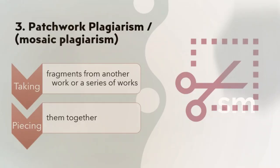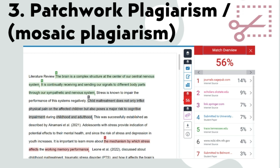The third type of plagiarism is called patchwork plagiarism or mosaic. In this type of cases, the person takes fragments from another work or a series of works and pieces them together. In this case, we can see that the student has taken information from three different sources and inserted one sentence in between each of the sentences taken from other sources, to make believe that this paper has been written by the same person. Unfortunately, it was not the case, and Turnitin has been able to detect mosaic plagiarism.